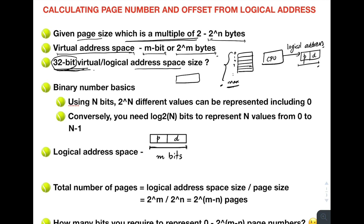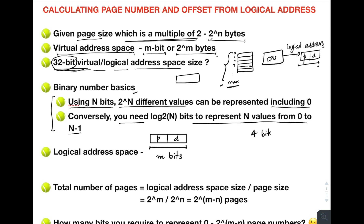Let's revisit binary number basics. Using n bits you can represent 2^n different values including 0. Conversely, you need log base 2 of n bits to represent n values from 0 to n minus 1. For example, using 4 bits you can represent 2^4 different values. Conversely, for values from 0 to 2^4 minus 1, you require 4 bits — that is log base 2 of 2^4, which is 4 bits.